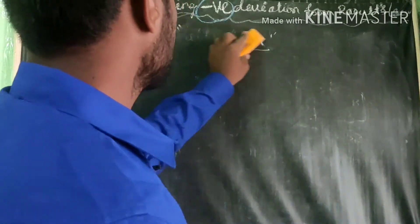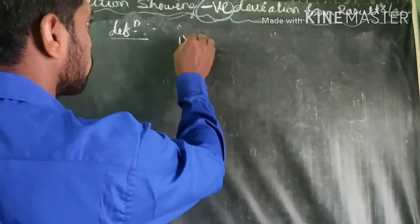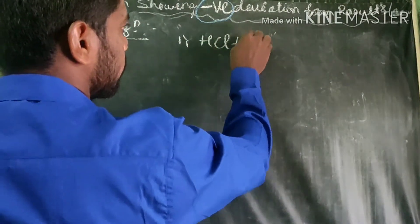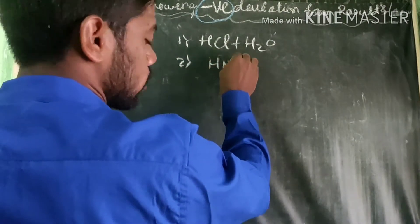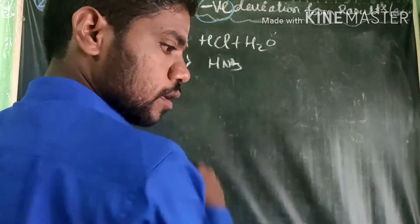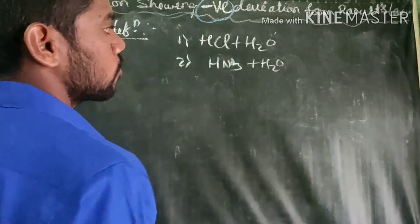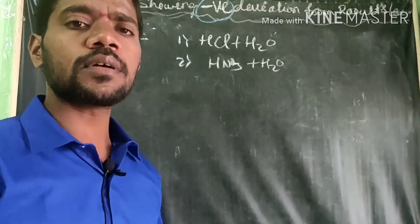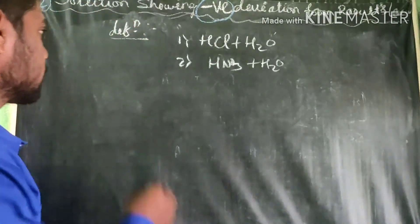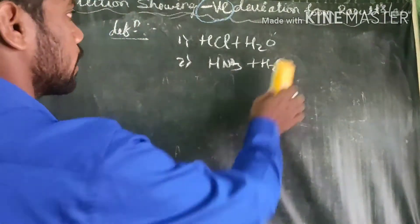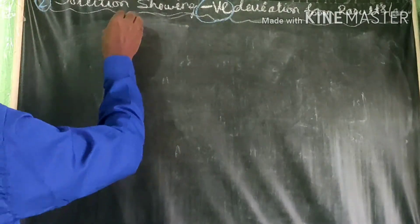What are the examples for negative deviation from Raoult's law? The examples are: HCl plus water, and HNO₃ plus water. These are the two simplest examples you have to remember.